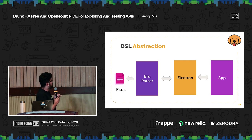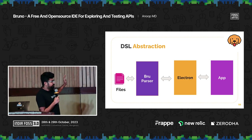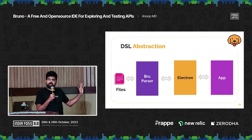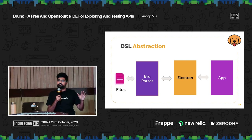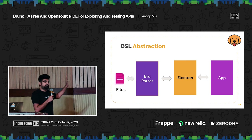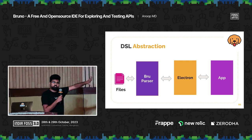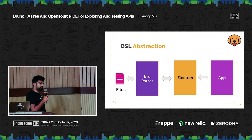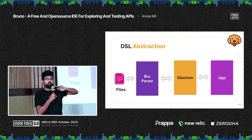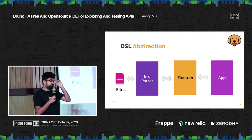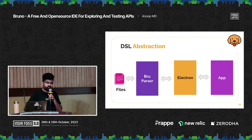Let's move on to DSL abstraction. In Bruno, requests get stored in the Bru language. But the app and the Electron layer have no clue about what the Bru language is. There's a tiny parcel — five files — that converts between the Bru file format and an internal JSON DSL. Electron and the app have no knowledge of Bru. So in version two, we're going to support not just Bru language — you can save your things in JSON, YAML, or TOML as well.